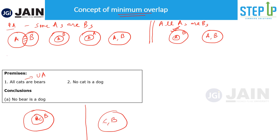The second statement 'no cat is a dog' is a universal negative type of statement, meaning two disjoint sets — C and D. When drawing conclusions, notice there are three terms, meaning there's a common term creating an overlap. We have to merge these two statements' diagrams to see whether we can come to a conclusion.